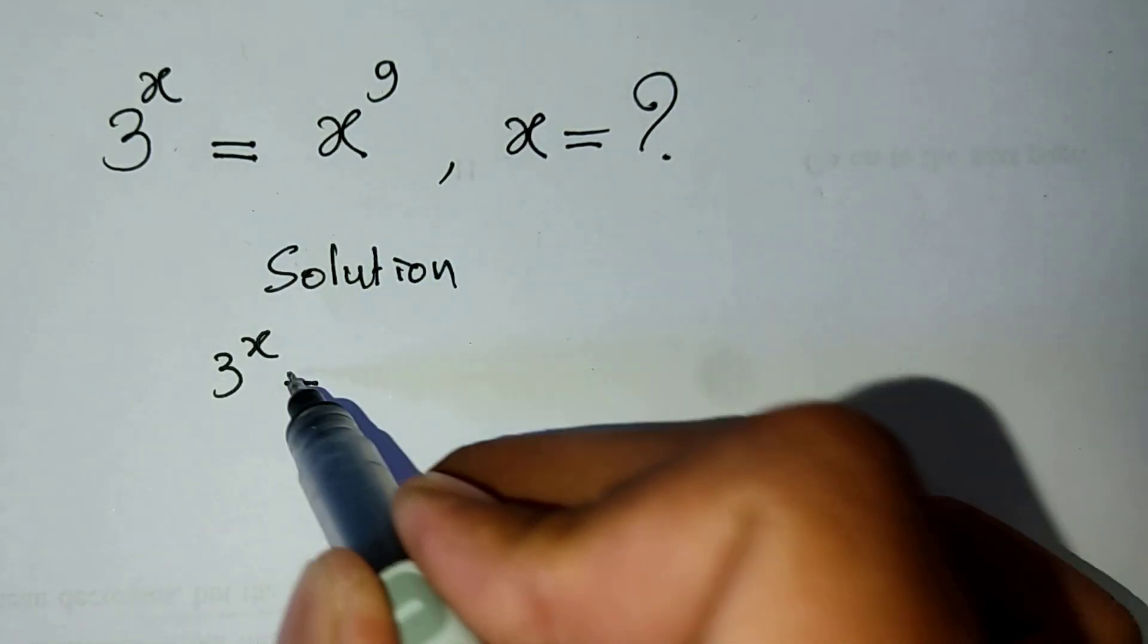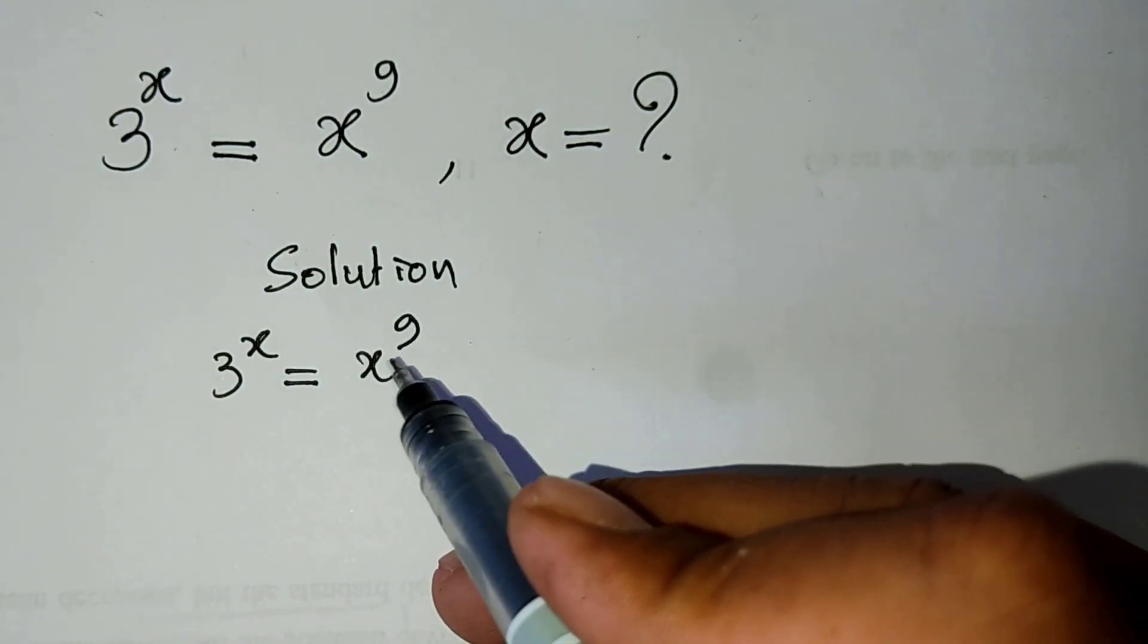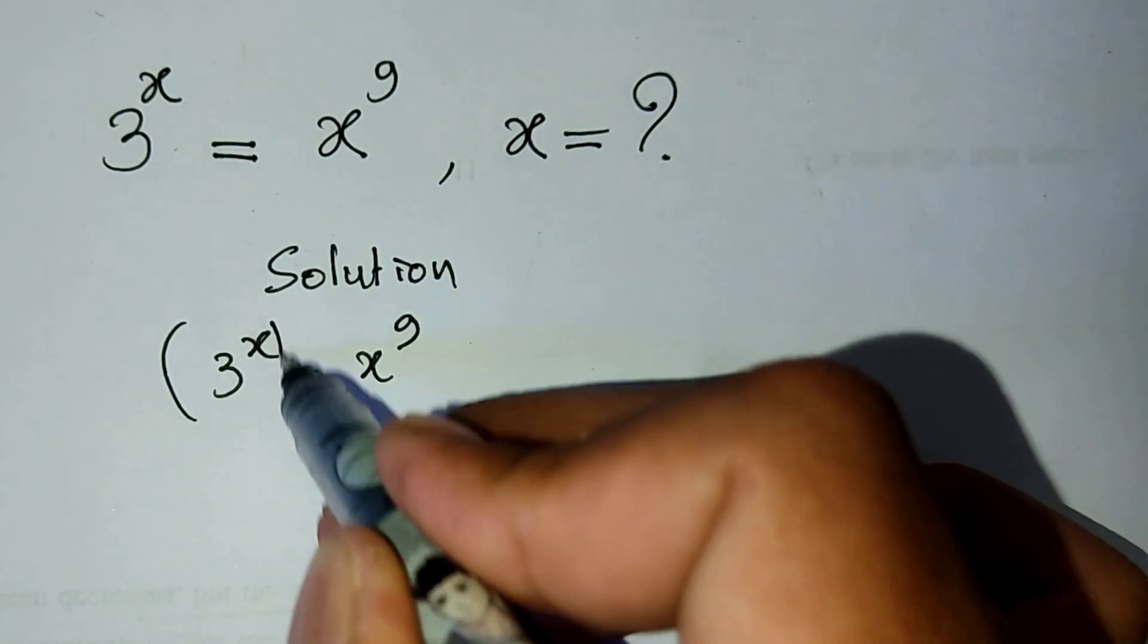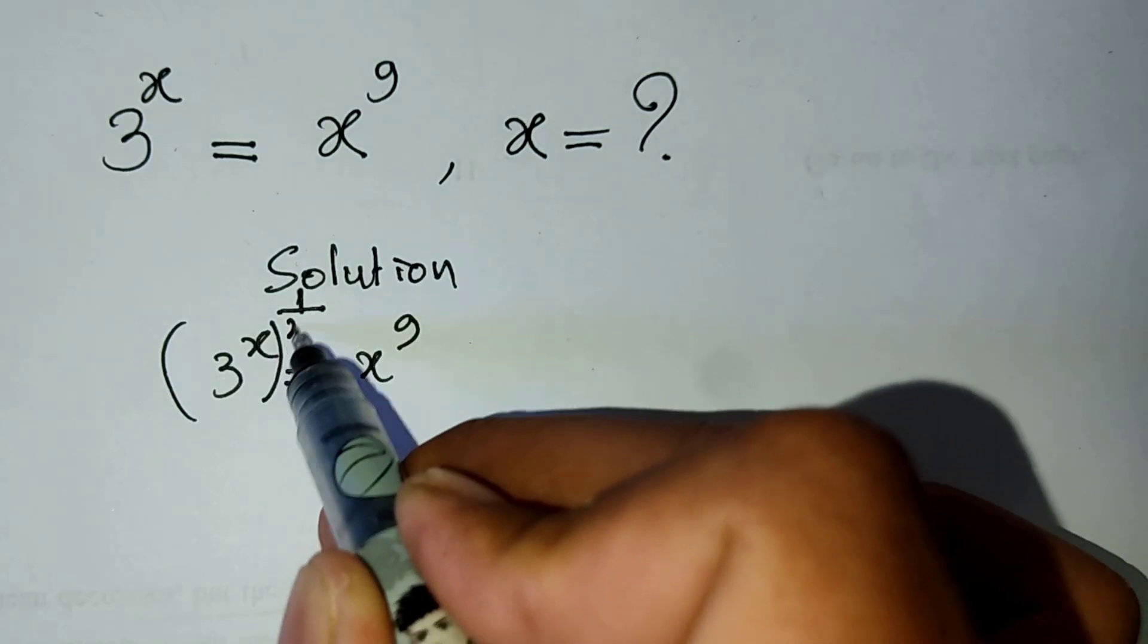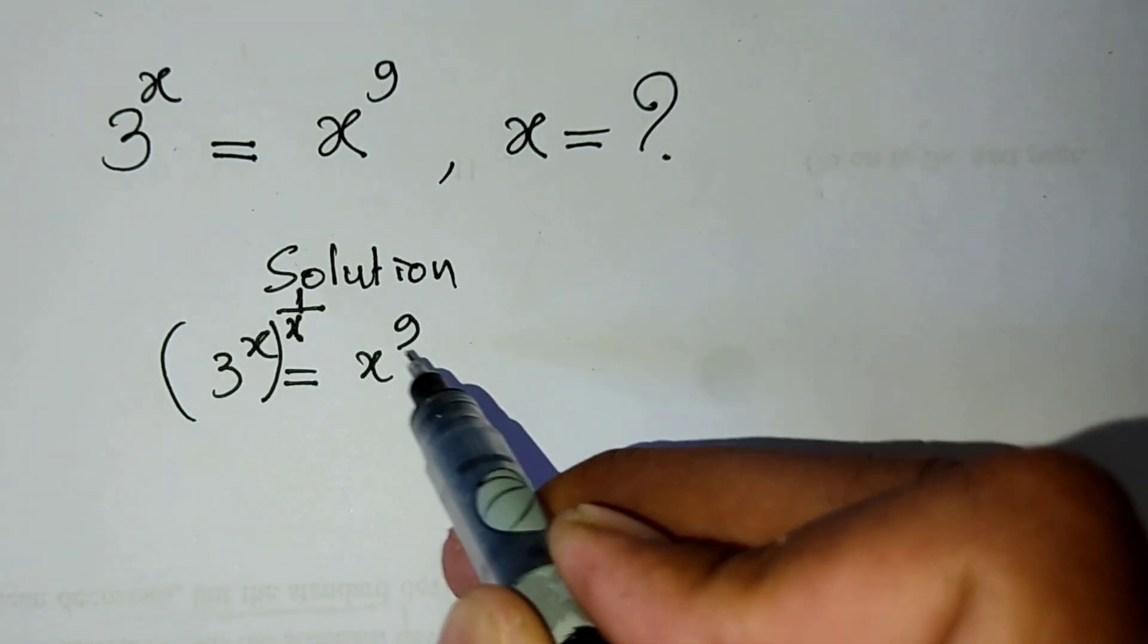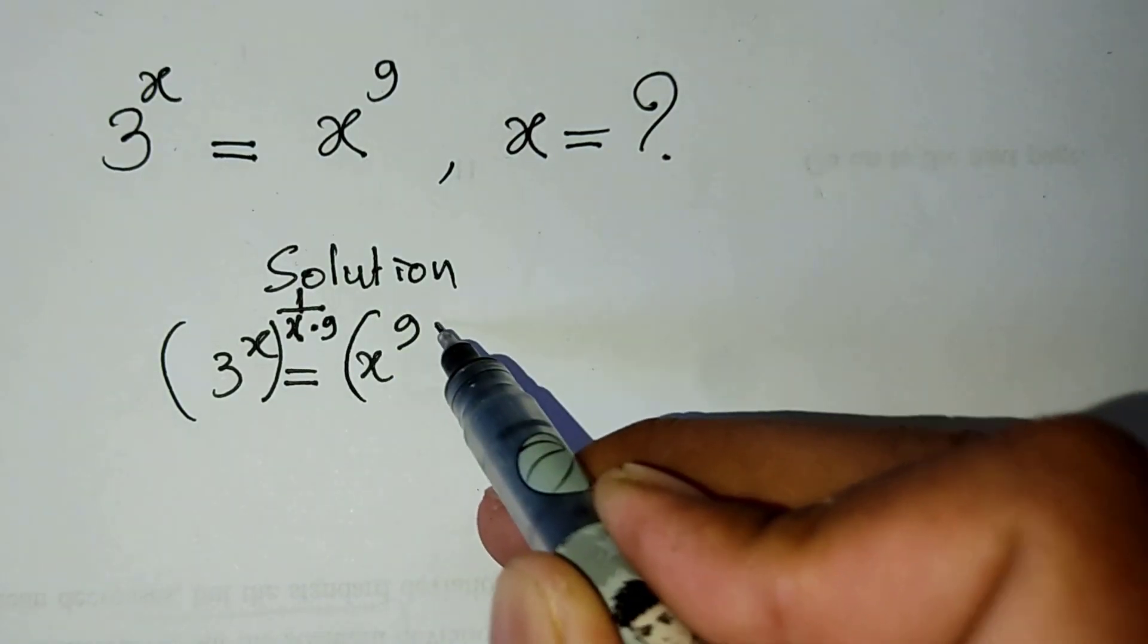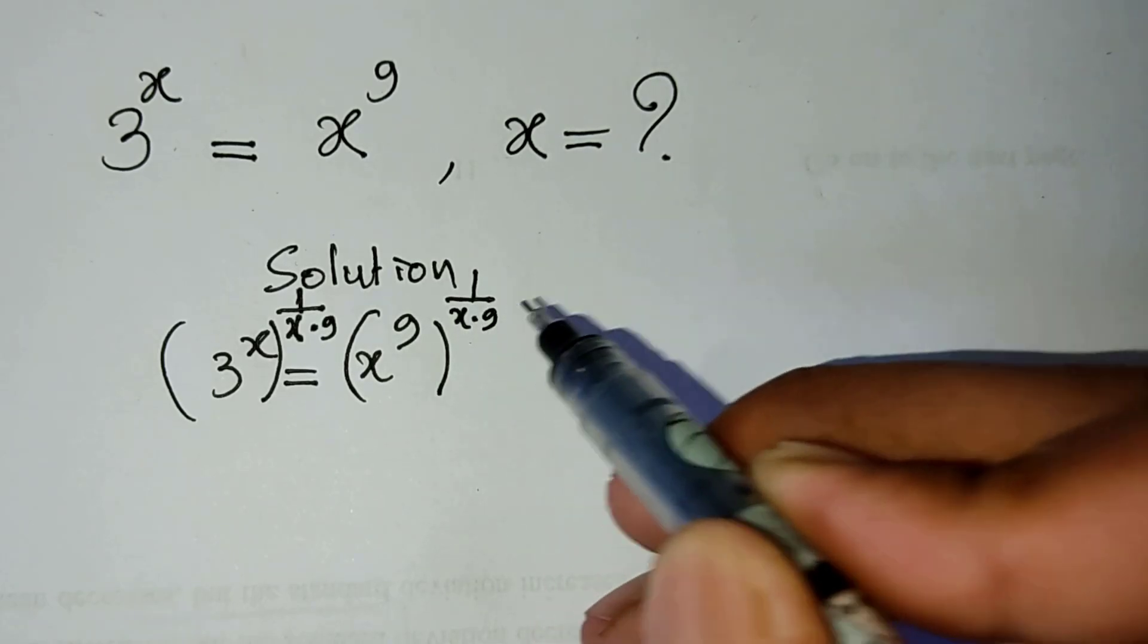3 power x equal to x power 9. First, I'll raise both sides of this equation to a power. Here is x, so 1 divided by x. And here is 9, so we times 9. And also, the right side, raise to power x times 9.